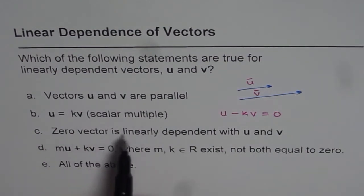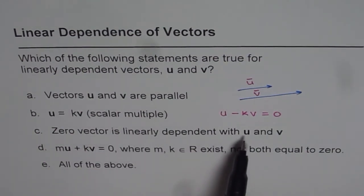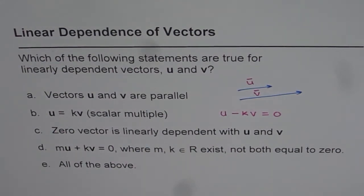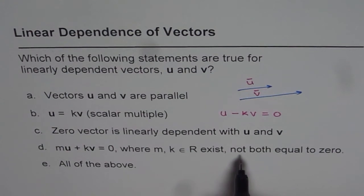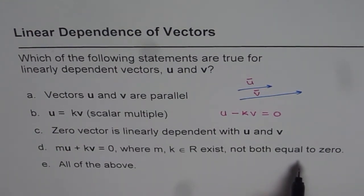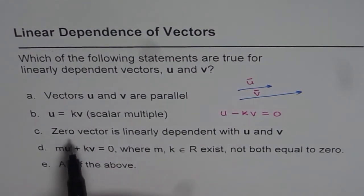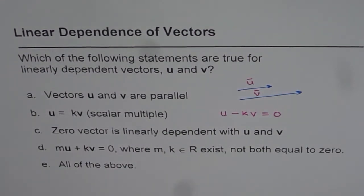Now, when we say 0 vector is linearly dependent with u and v, that means we could use 0 vector here. If v is 0, in that case k be anything. k could be 1, 2, 3, 4. This property not both equals to 0 satisfied. That is kind of very important to understand that 0 vector is linearly dependent with u and v or for that matter any vector.